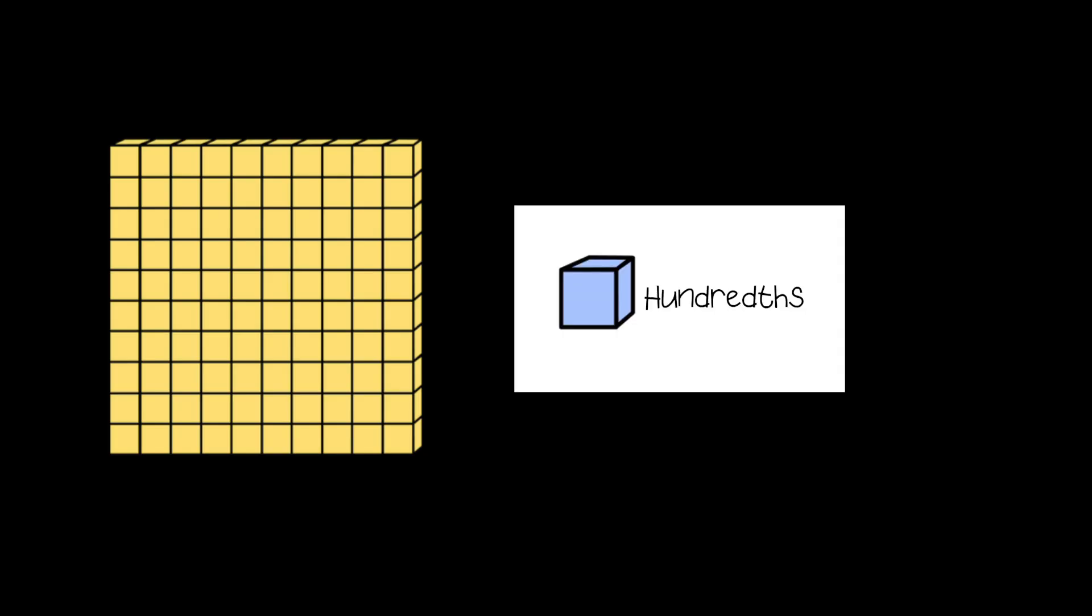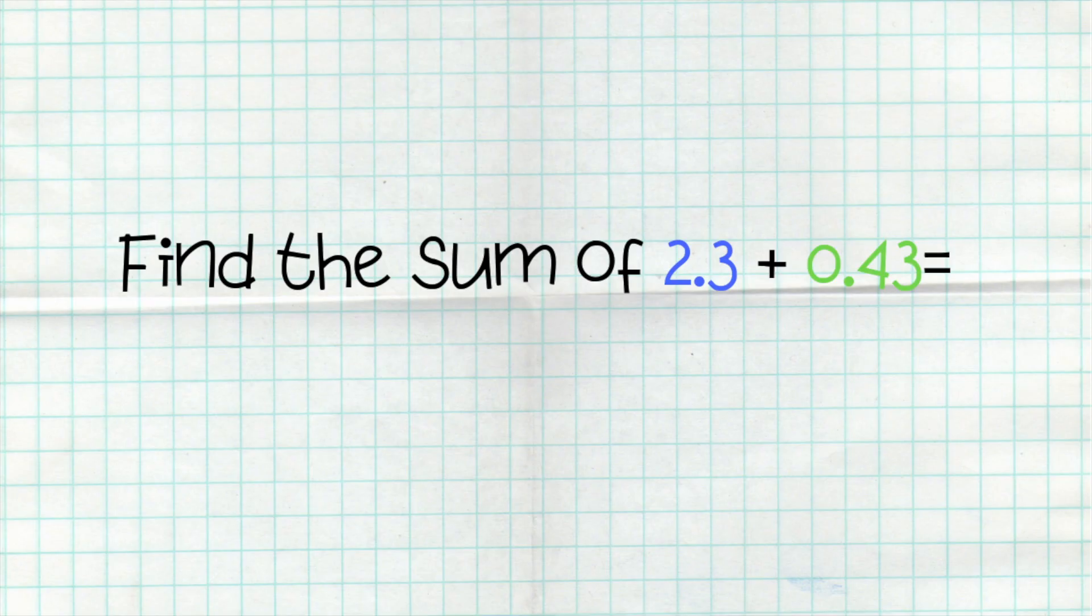Now, I don't want you to get confused because they may look similar, but actually 100 of these hundredths would fit inside of the ones chart. Now, for our first strategy, let's go ahead and add these decimals. Find the sum of 2.3 plus 0.43.